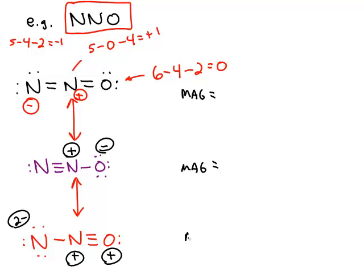Of each of these structures. Negative one and positive one, just ignore the negative sign. This is a charge of one, another charge of one, that's a magnitude of two. Same thing for the middle one, that's a magnitude of two.